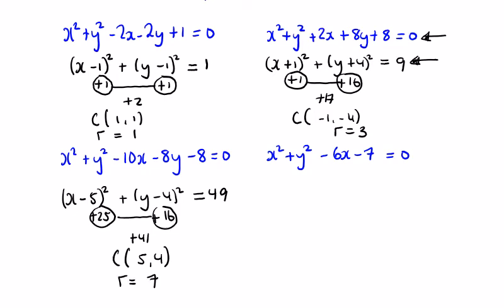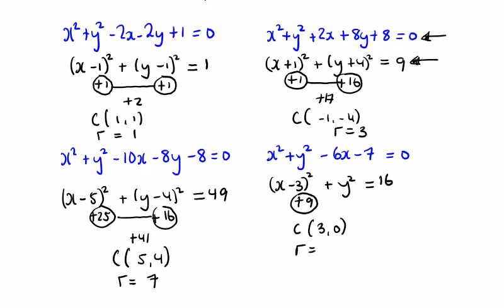For the fourth question, there's no y-term other than y squared, so we have (x minus 3) squared, which brings in a 9 we don't want, and then plus y squared with nothing else. I've brought in 9, but I want to get back to minus 7, so I take away 16, giving equals 16. The centre is (3, 0) — change the sign of 3, and there's nothing with the y — and the radius squared is 16, so the radius is 4. If you didn't get these four right, go back and practise them again.